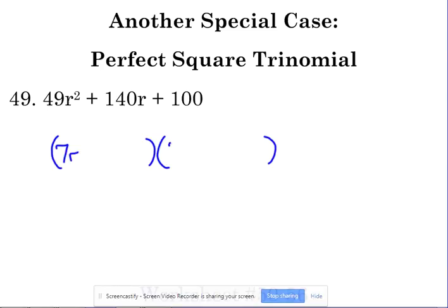49, the square root of 49 is 7. So we've got 7r and 7r just like we did on the previous problem. Square root of 100 is 10. So we've got 10 and 10.